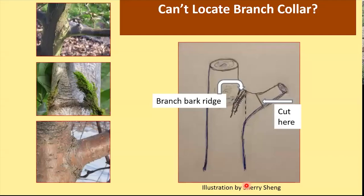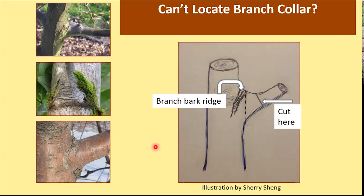It's important to know how to identify the collar, and unfortunately different trees have different shapes and looks. Some may appear swollen, some may appear wrinkled, and in some it may be very difficult to locate. If you cannot visually identify the collar, begin with the branch bark ridge, draw an imaginary line flush with the trunk, estimate the angle between these two, and simply repeat that angle on the other side — that gives you where to make the cut. Cutting at that angle will give you a wound that is round, not oval.